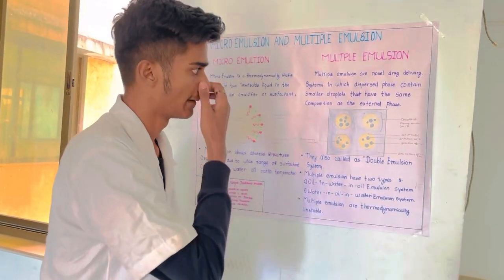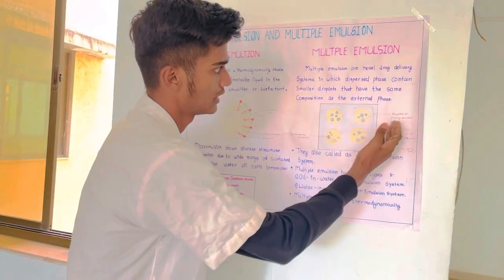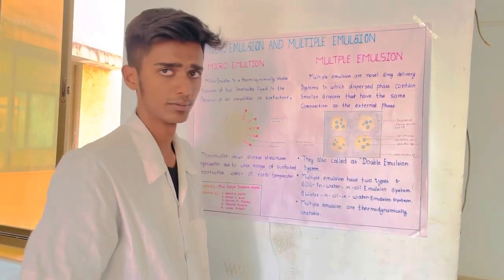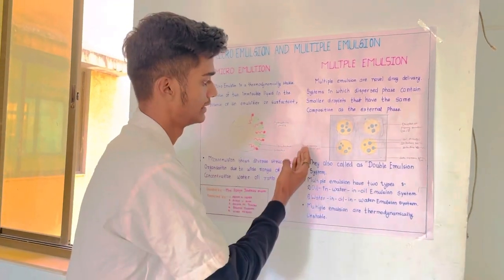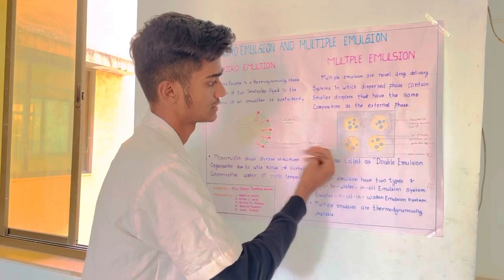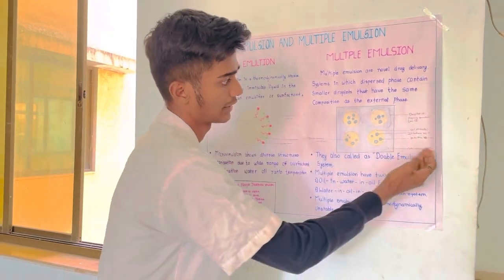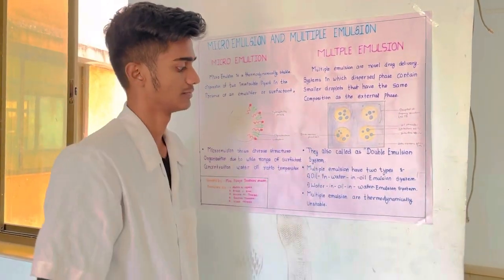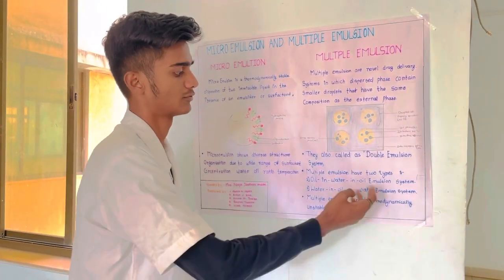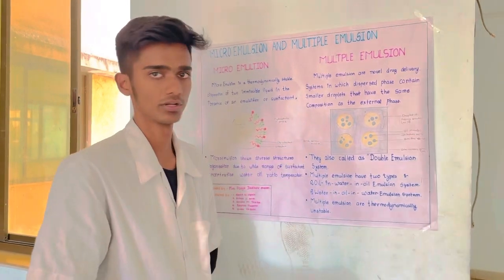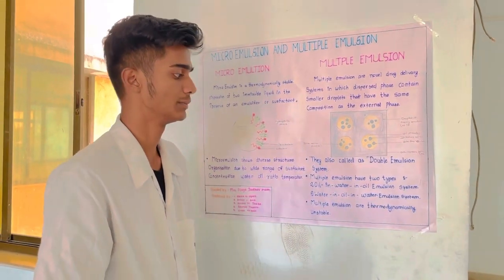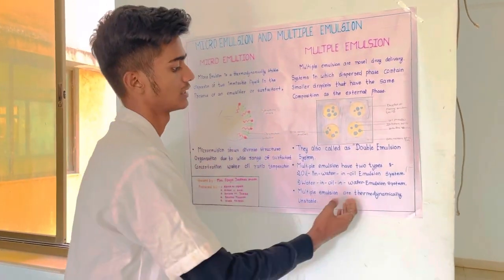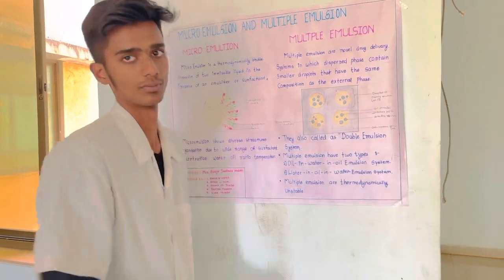In the diagram, the droplet of the primary emulsion and the droplet of the secondary emulsion can be shown. The inner aqueous phase and the outer aqueous phase are indicated. They are also called as double emulsion systems. Multiple emulsions have two types: oil-in-water-in-oil emulsion system, and water-in-oil-in-water emulsion system. Thank you.